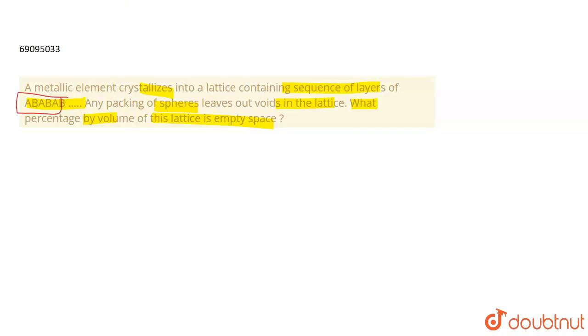ABAB type packing means a hexagonal closed packed structure. So the radius of your sphere is R. What will the volume be? Area into the height.